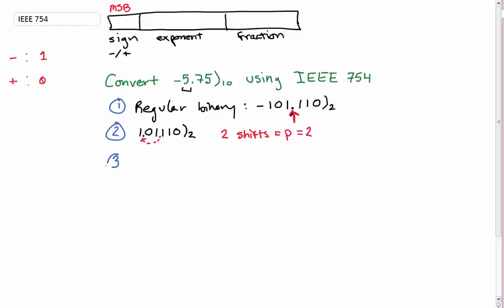This is where that bias number I was talking about earlier comes in. Our exponent section is equal to the bias plus p. Since we're doing this in single precision, our bias is 127 and our p is 2, which means that our exponent is 129.